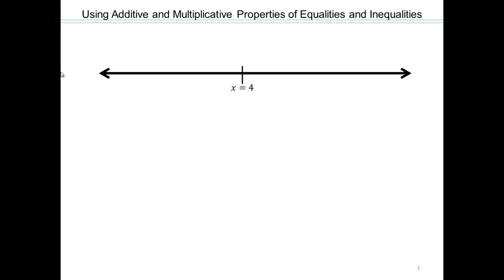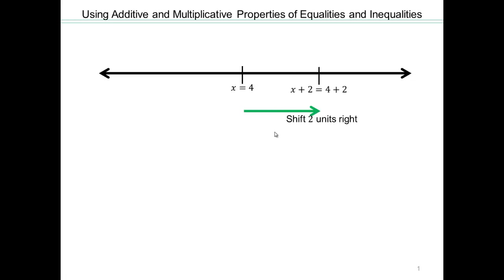Let's talk about the additive and multiplicative properties of equalities and inequalities. Let's look at a number line. Let's say x equals 4 is right there. If I add plus 2 on both sides of the equation, adding a 2 means you're going to move 2 units to the right. So let's add 2 and shift 2 units to the right.